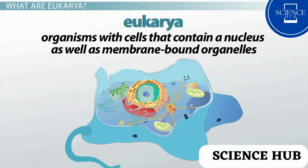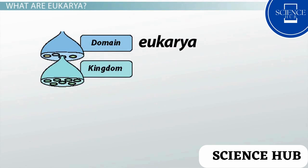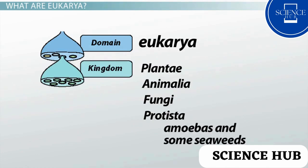Eukaryotic organisms are organisms with cells that contain a nucleus as well as membrane-bound organelles. The kingdoms most associated with Eukarya are Plantae, Animalia, and Fungi. Additionally, kingdom Protista has had some of its organisms, such as amoebas and some seaweeds, classified as Eukarya.